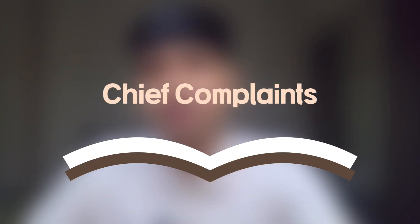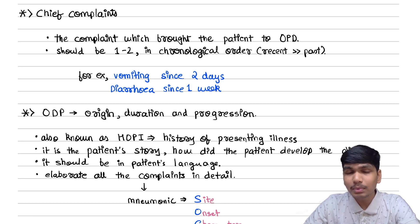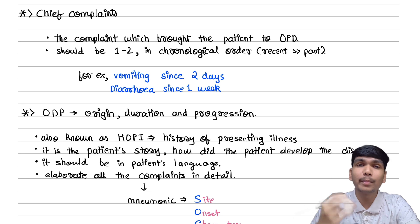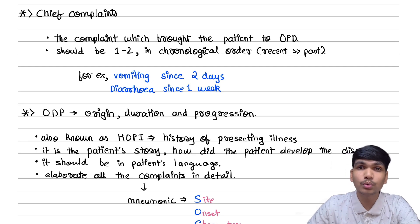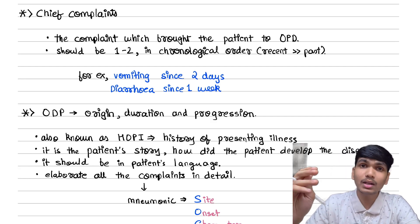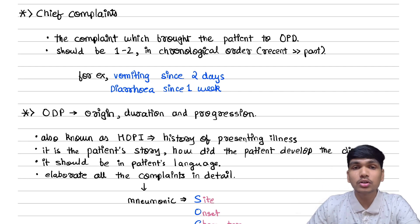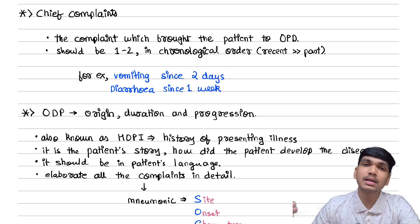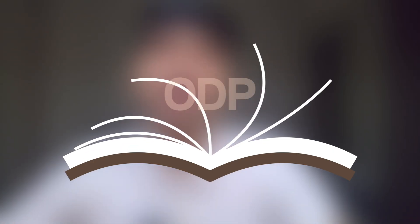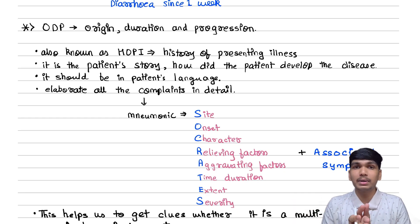Now the next part is chief complaints. In chief complaints, you should mention the complaint which brought the patient to the OPD. A patient will have multiple complaints, but only one complaint will compel the patient to present to the OPD. Always mention one or two chief complaints arranged in chronological order — for example, vomiting since two days and diarrhea since one week. So the most recent complaint comes first and the past complaint comes later. Next is ODP — that is origin, duration, and progression of the disease — which is the very important part.